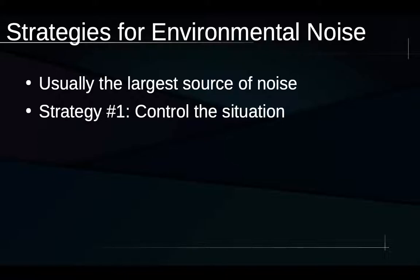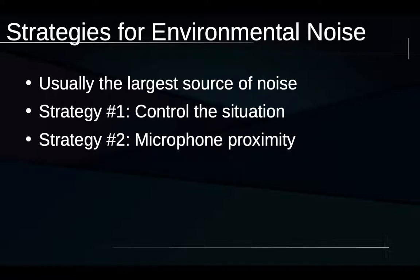When we have noise sources in the environment that we can't remove, we move to the next strategy: microphone proximity. Every time we double the distance between a source and a microphone, the energy reaching that microphone from that source goes down by 6 decibels. By putting microphones much closer to what we want, we increase the level of the desired sound while the level of other things either stays the same or decreases. Microphone proximity is really the second most powerful strategy for reducing noise in our recordings.